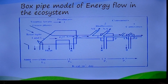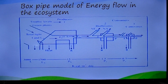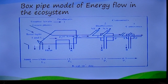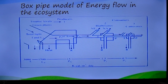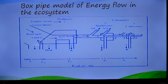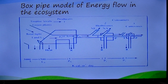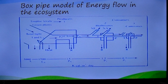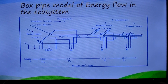It becomes evident that there is a reduction in energy flow at each successive trophic level. In other words, shorter food chains result in greater available energy, as an increase in the length of the food chain corresponds to a greater loss of energy.